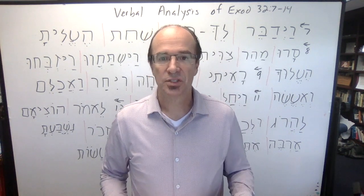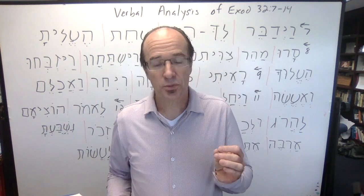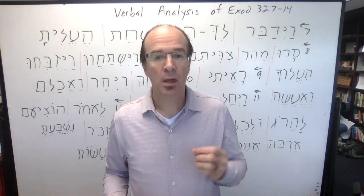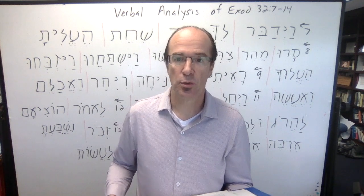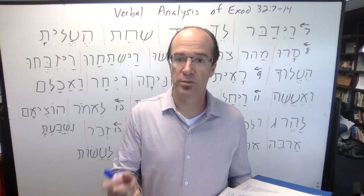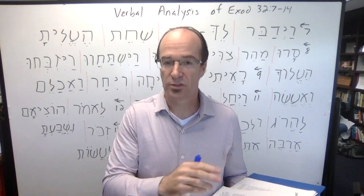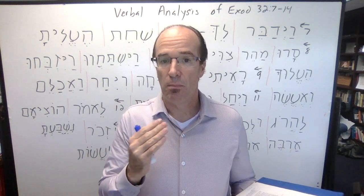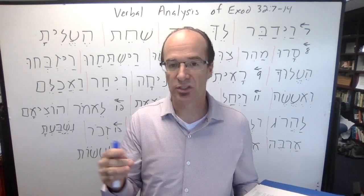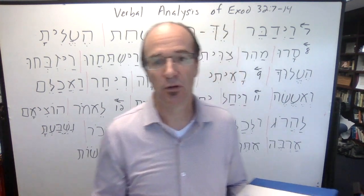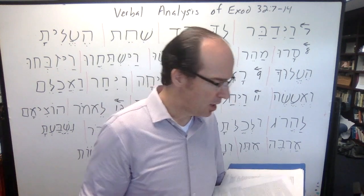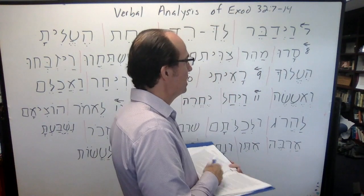Hi everyone, welcome back to class. Today I want to go over the verbs. I'm going to use some categories from Arnold Choi, so have your Arnold Choi book handy. We're going to walk through Exodus 32:7 to 14. I put most of the verbs up here. There are a couple forms of dabar that I left off since they were easy, and also most of the vav-consecutive imperfect from amar — 'and he said' or 'and they said' — I have not included. I included one infinitive form of amar just to look at it. So I'm going to walk through these and talk a little bit about how to analyze these.